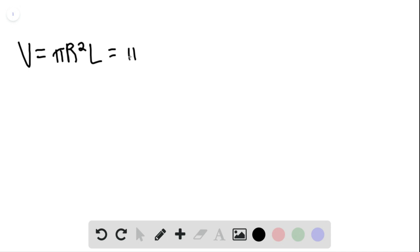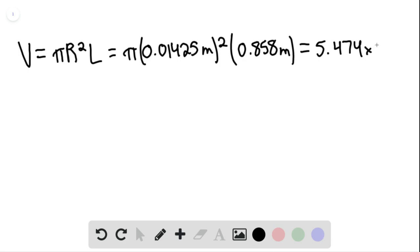And so this would be pi multiplied by the radius of the rod 0.01425 meters quantity squared, multiplied by 0.858 meters. So the volume of the rod is 5.474 times 10 to the negative fourth meters cubed.